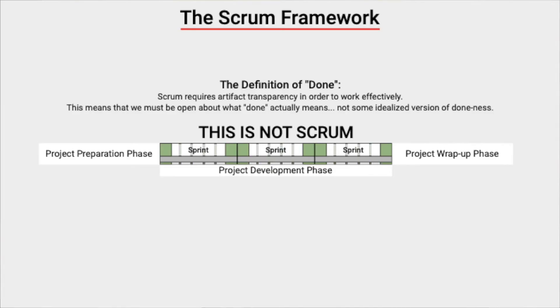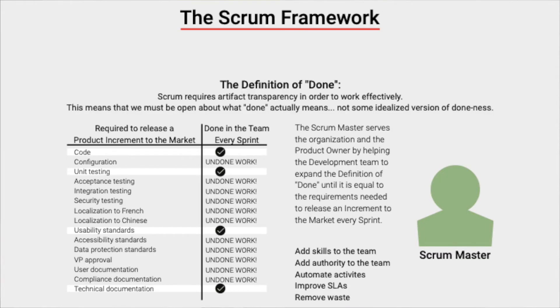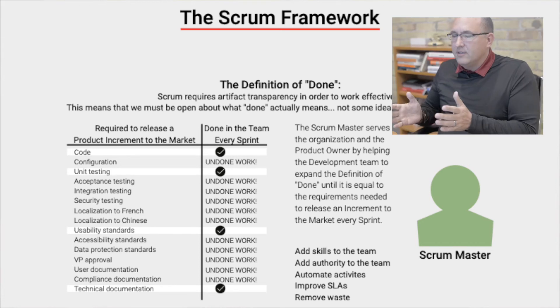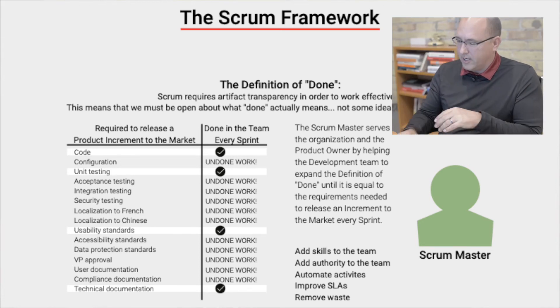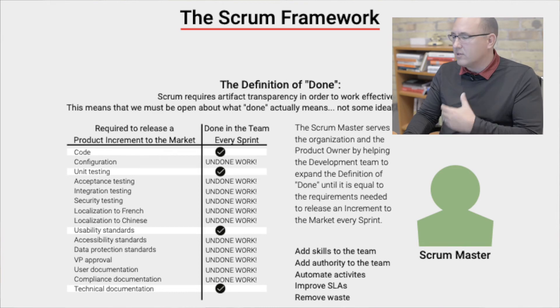Over time, we want to change this situation. The Scrum Master is responsible for helping the team expand the Definition of Done so that 'done' looks more like 'releasable' over time. That is organizational work — it involves skill sets and many aspects of improving how the team operates.